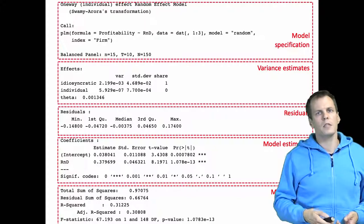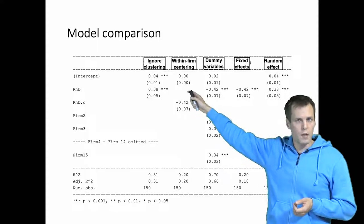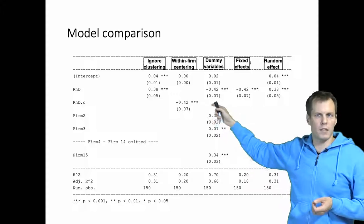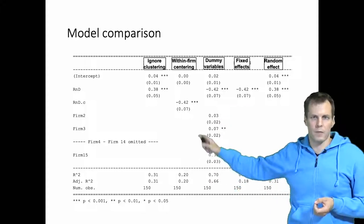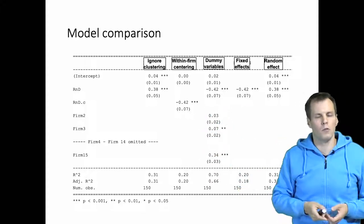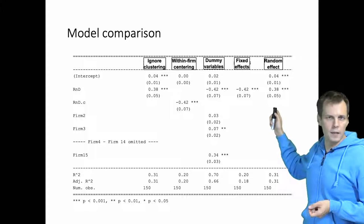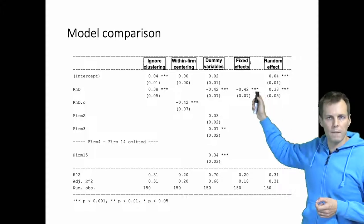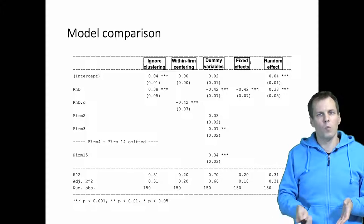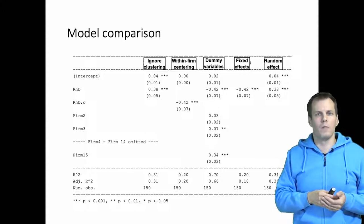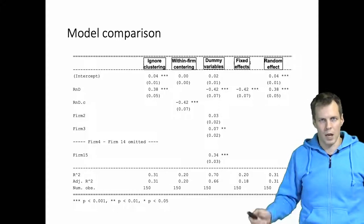Comparing the two estimates in a table alongside five models — the normal regression model, within-firm centering, dummy variable, GLS fixed effects, and GLS random effects — the fixed effects approaches all round to an estimate of 0.07. The GLS random effects estimate is quite different from the GLS fixed effects estimate; they have different signs and are both highly significant but in opposite directions.